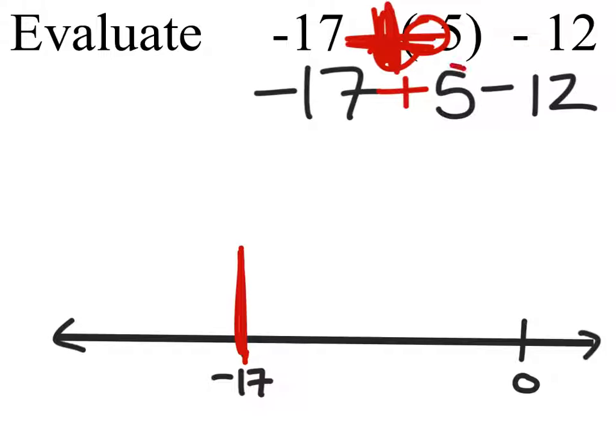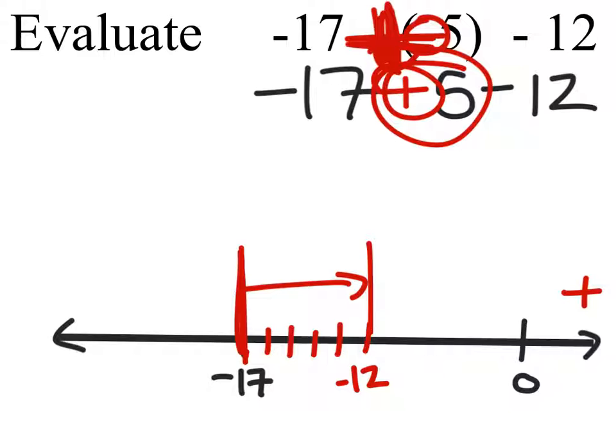We're going to go now in the positive direction here 5 spaces. So we would go to the positive direction which is to the right 5 spaces, and that takes us to negative 12. So when we combine these we get negative 12, and we still have that minus the other 12.